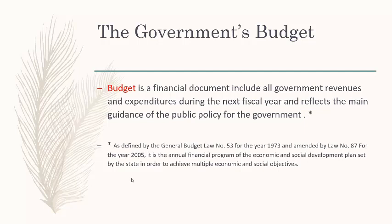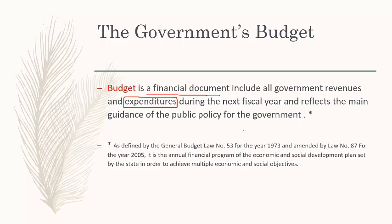First of all, it starts by defining what we mean by budget. The budget is a financial document — we are talking about numbers — that includes all government revenues and expenditures. Note that the Egyptian budget circular uses the term 'expenditure,' which is only used in governmental accounting. The budget reflects the main guidance of public policy for the government. In Egypt, we prepare the budget according to Law number 53 for the year 1973, amended by Law 87 for the year 2005.